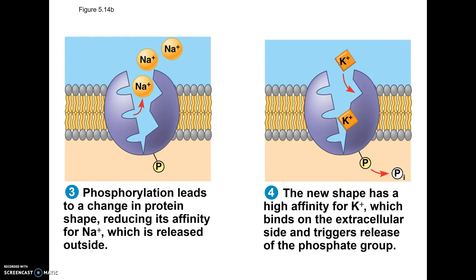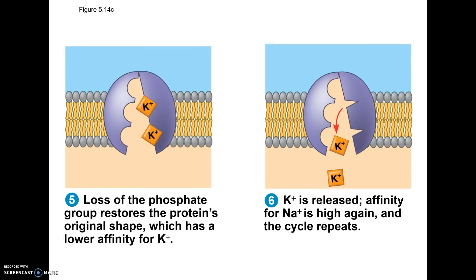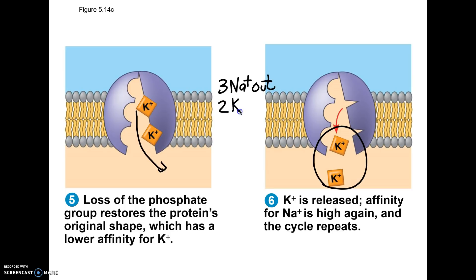When the two potassiums bind, that causes the phosphate that ATP left on there to leave. When the phosphate leaves, the protein goes back to its original shape, and the potassiums are released. Overall: three sodiums got pumped out, two potassiums got pumped in, and the driving energy force was ATP. The phosphate breaking off of ATP changed the shape of the protein to carry things across.